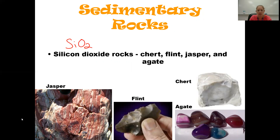Another type of chemical sedimentary rock is silicon dioxide rocks — all the types listed here at the bottom. Agate is one you might recognize from souvenir shops that have containers of rocks where you fill a bag with whichever ones you want. That's agate.